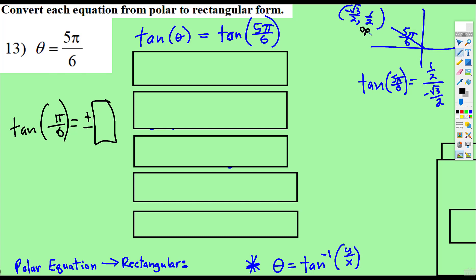and tangent is opposite over adjacent, so 1/2 divided by negative √3 over 2, and then remember, we don't want a fraction over a fraction, so we're going to take that denominator and multiply by its reciprocal.